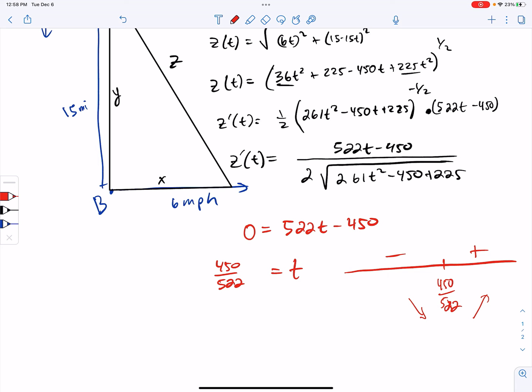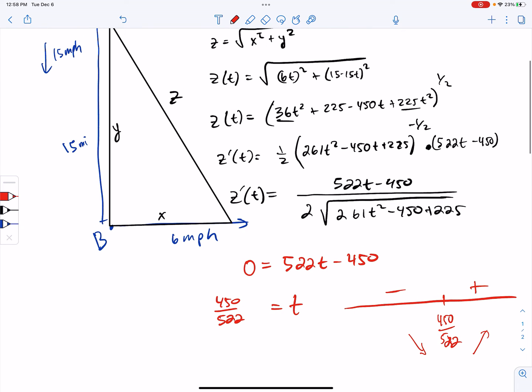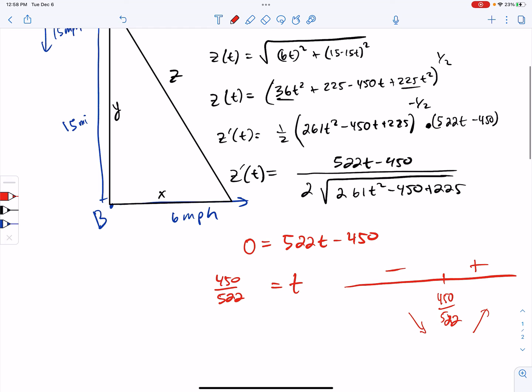So that's the time when the two ships are closest to each other, but I want to know what actually is that distance. So what we'll do is we'll say Z of 450 over 522. So I'm going to plug that into this original function for Z. So I'm not going to write that out, but it comes out to roughly 5.57 miles.